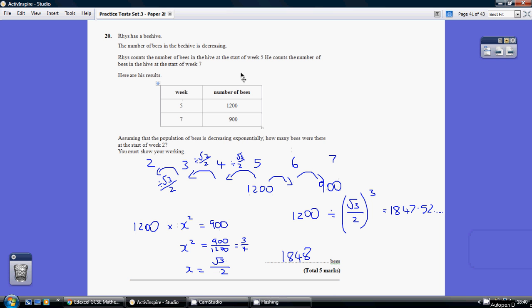We're being asked to work out the number of bees at the start of week 2, so do a little diagram to gather your thoughts. Not at the start of week 5, or 4, or 3, but 2, so we're back 3 jumps: 1, 2, 3.